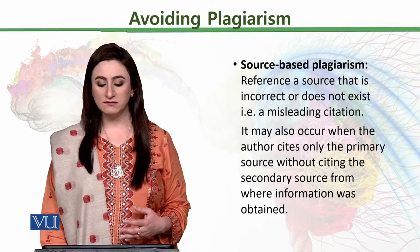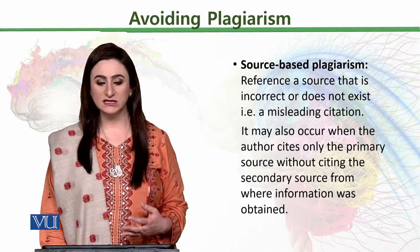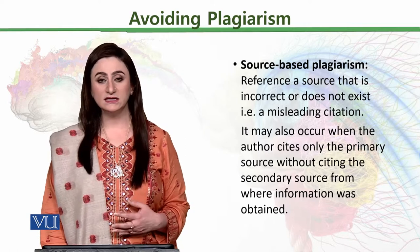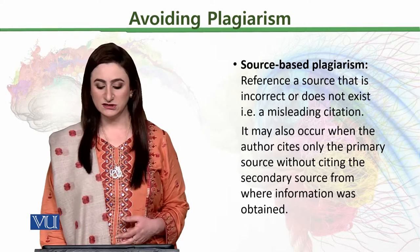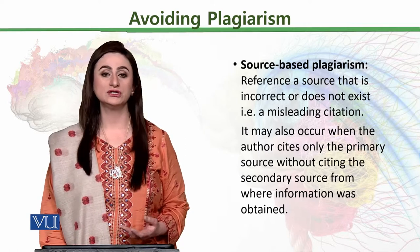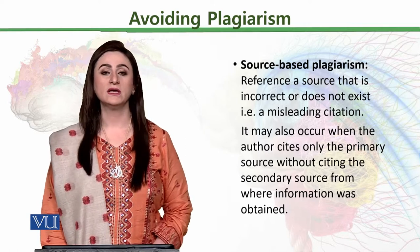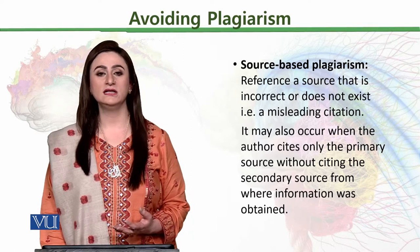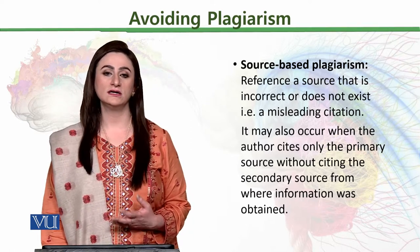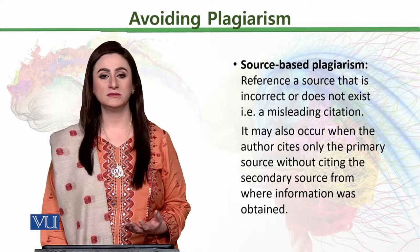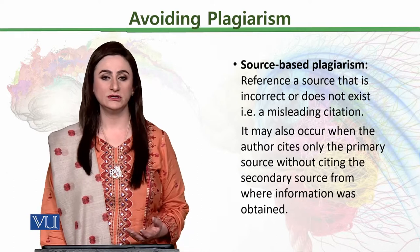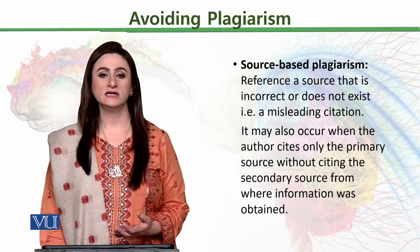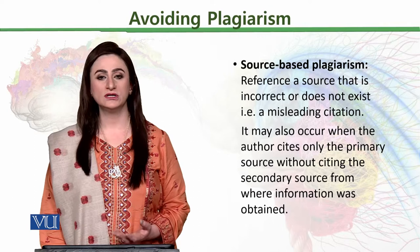Source-based plagiarism also occurs when the author cites only the primary sources without citing the secondary sources from where information was actually obtained. अब ये issue क्या होता है — जैसे आपने एक research article लिया, जो कि अगर आप एक topic पर काम कर रहे हैं, emotional regulation पे, और आपने एक research article लिया जो recently publish हुआ था emotional regulation के ऊपर।